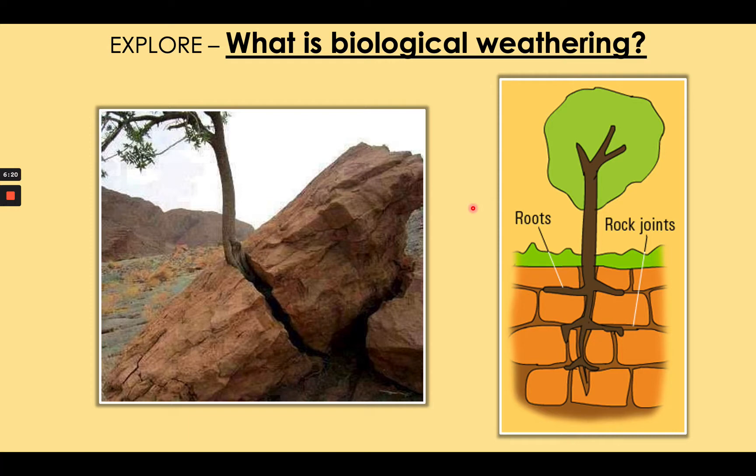It's not just trees that damage rocks — animals can also weather rocks. Rabbits may burrow into the ground, causing weaknesses in rocks and allowing them to break more easily. That's also biological weathering. Any living thing that damages rocks is called biological weathering.